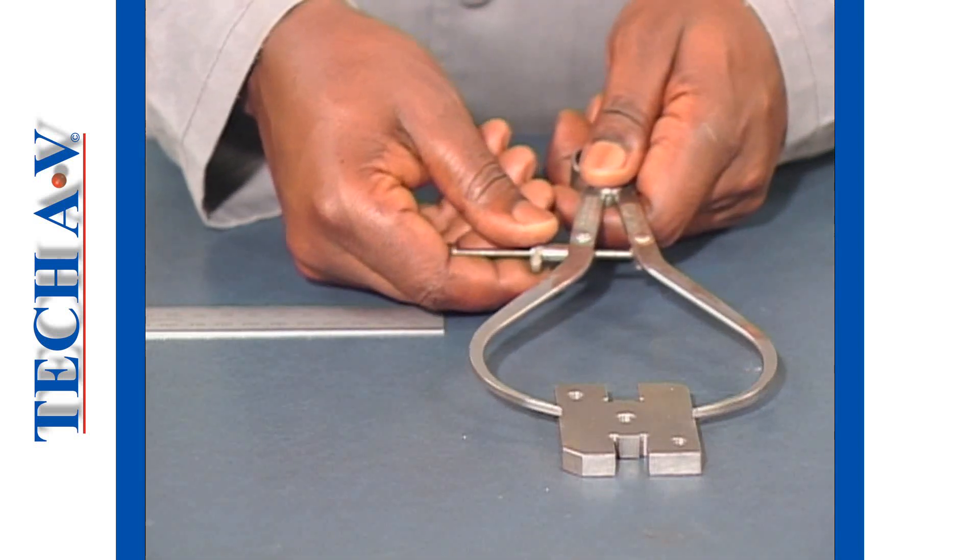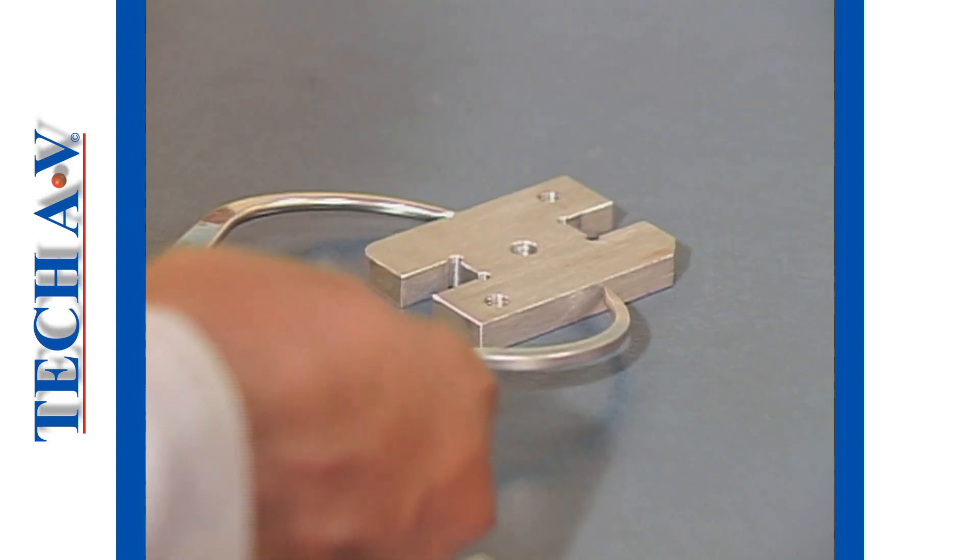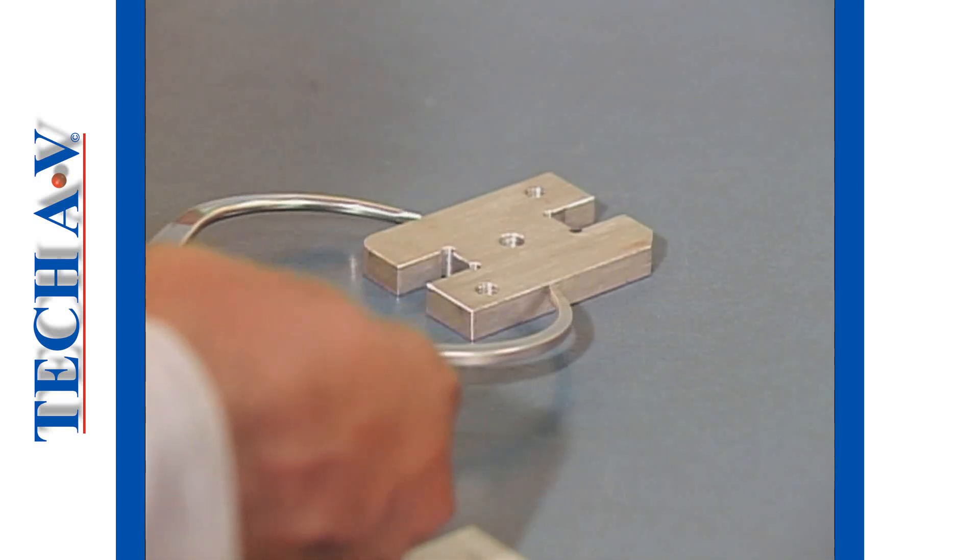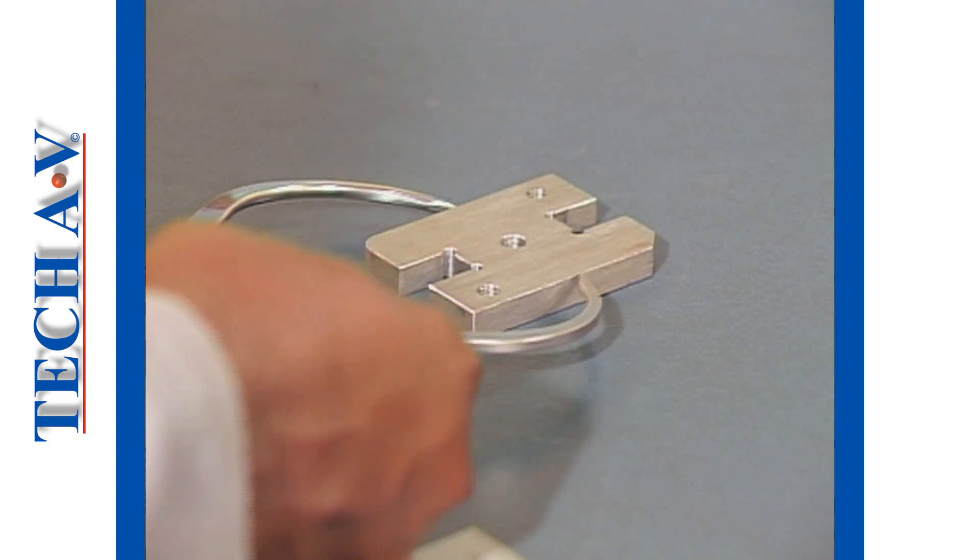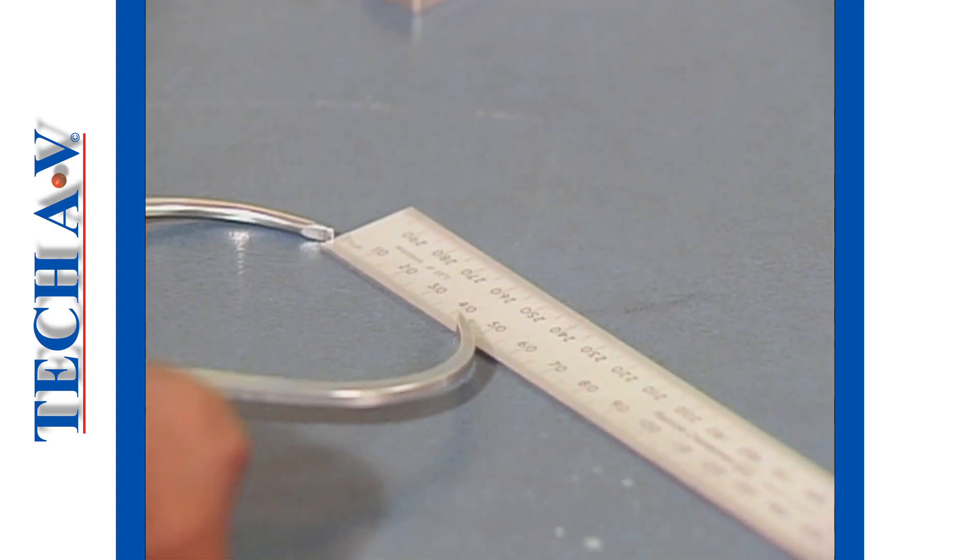Measuring to accuracies of half a millimeter takes a lot of practice and often we need to use other measuring tools, such as calipers, to help us take a reading. We shall be covering these tools in a later program in this series.